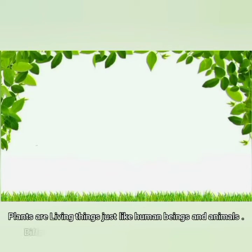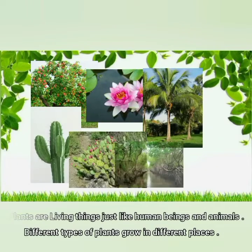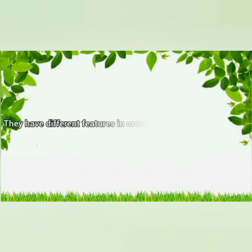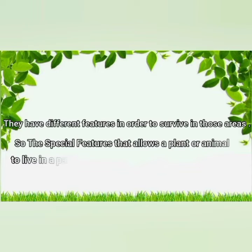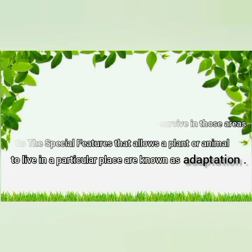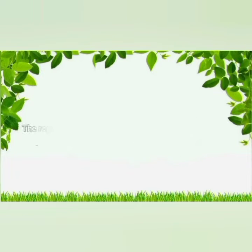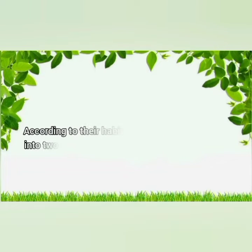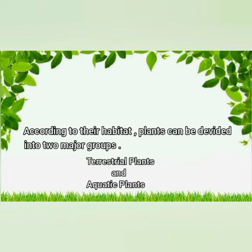Different types of plants grow in different places. They have different features in order to survive in those areas. The special features that allow a plant or animal to live in a particular place are known as adaptation. The region where a living thing lives or grows naturally is called its habitat.